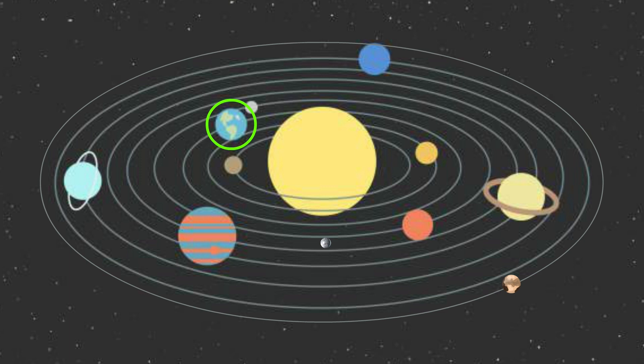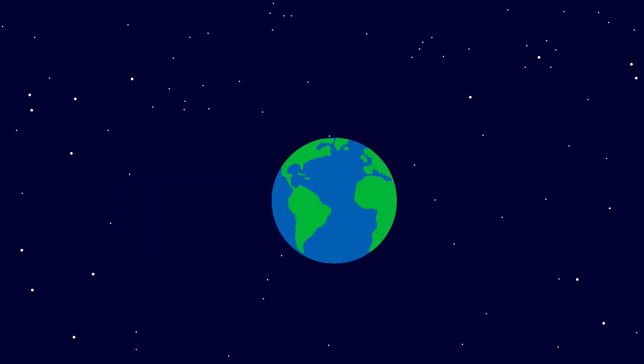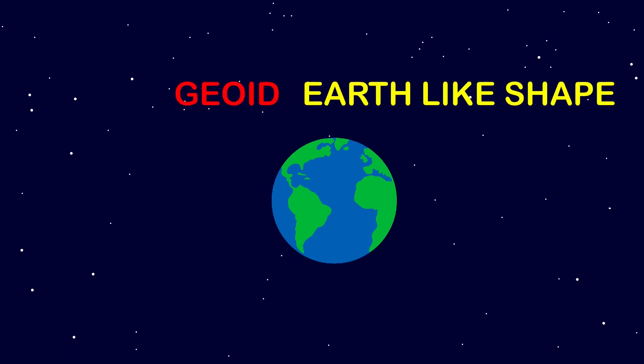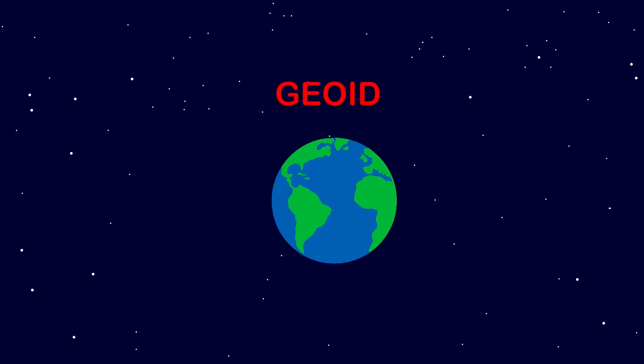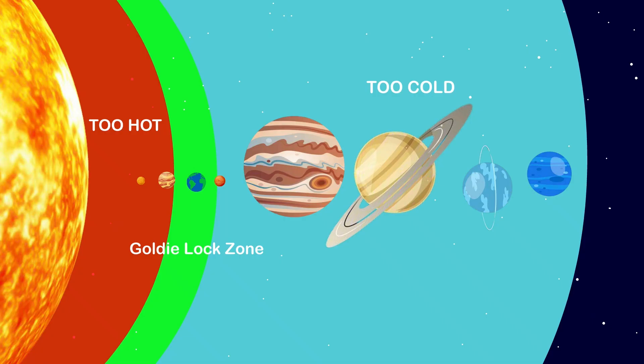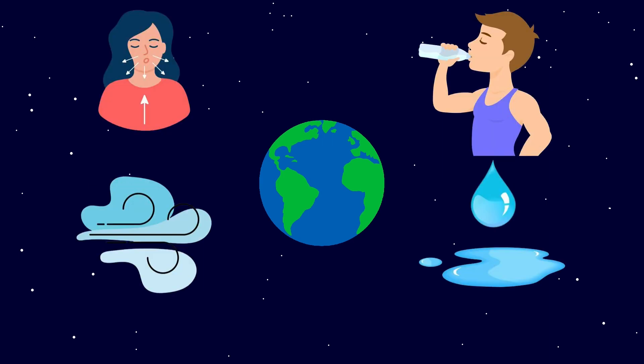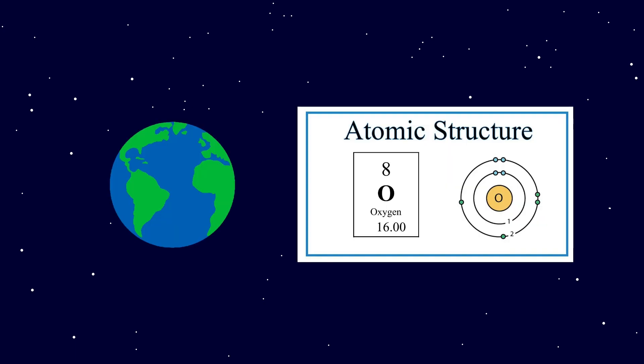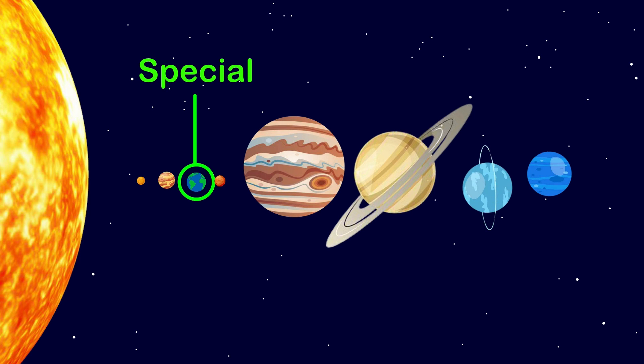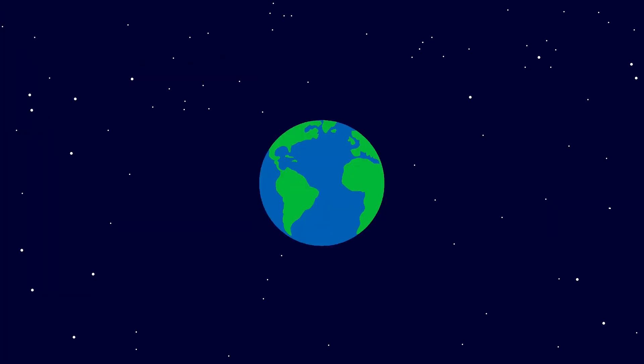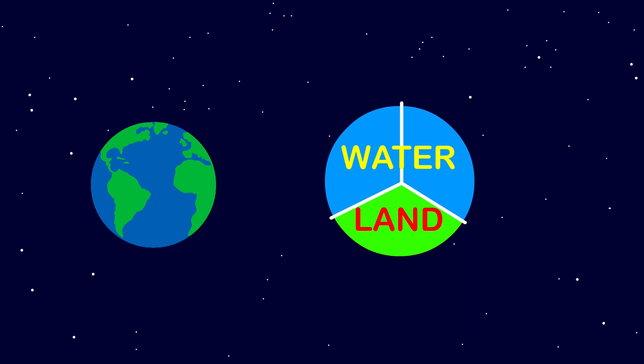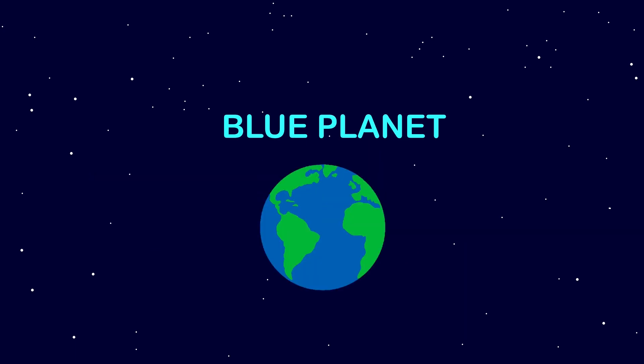The Earth is the third nearest planet to the Sun and the fifth largest planet in size. It is slightly flattened at the poles. That is why its shape is described as a geoid, which means an Earth-like shape. Only on Earth are there likely to be conditions that allow for life. The temperature of the planet is just right. It has air and water, two things we absolutely need to survive. Life-sustaining gases like oxygen are present in the air. The Earth is a special planet in the solar system as a result of these factors. The Earth appears blue from space because water covers two-thirds of its surface. As a result, it is referred to as a blue planet.